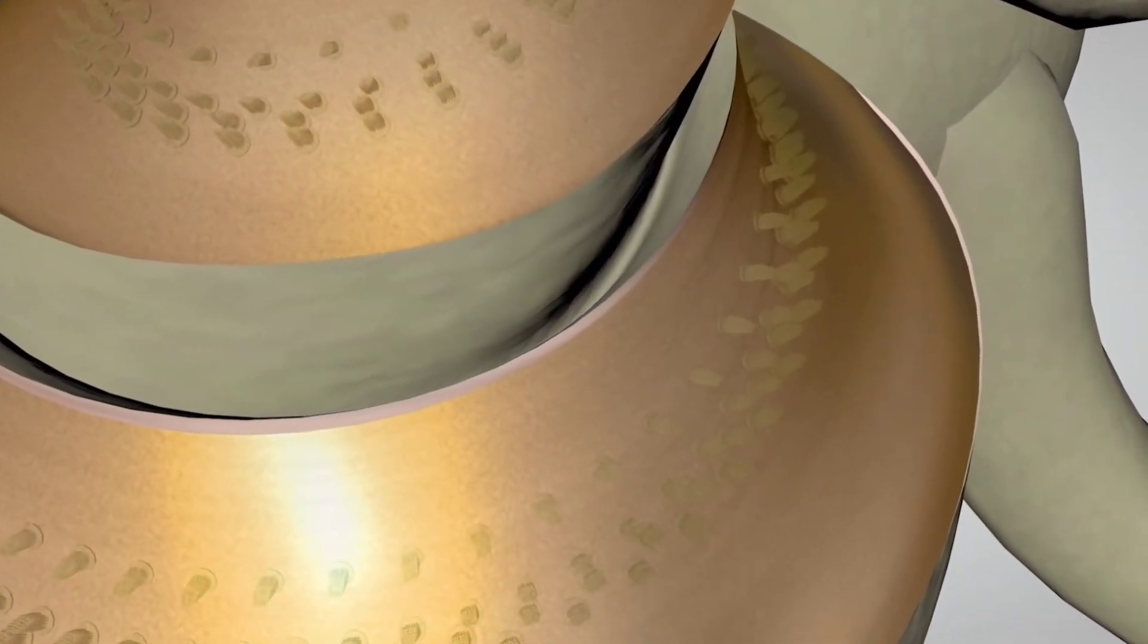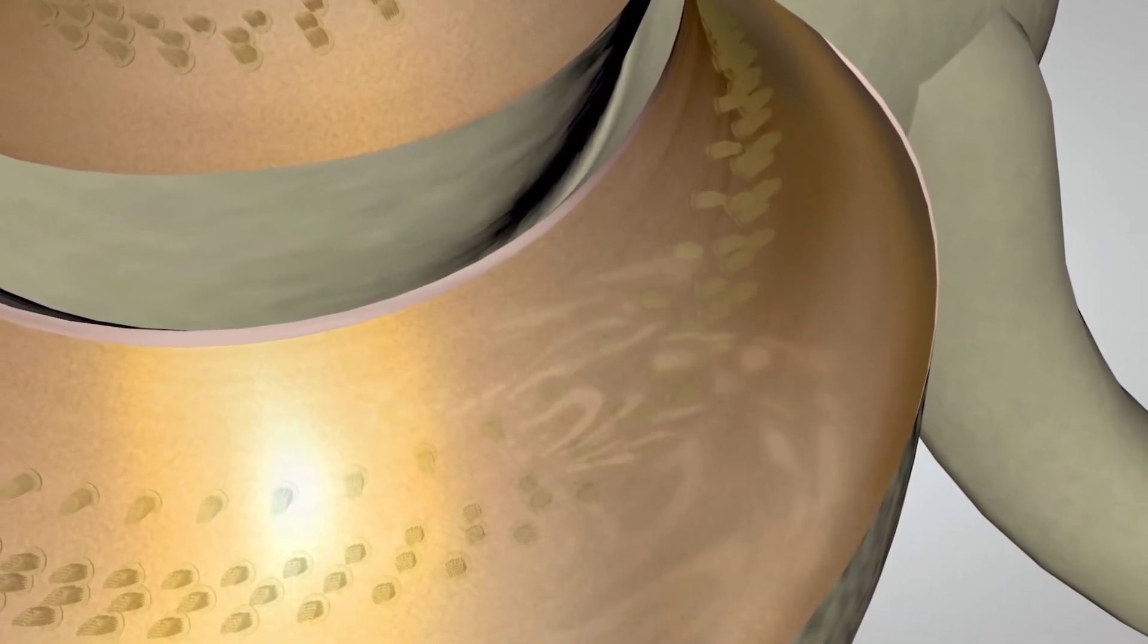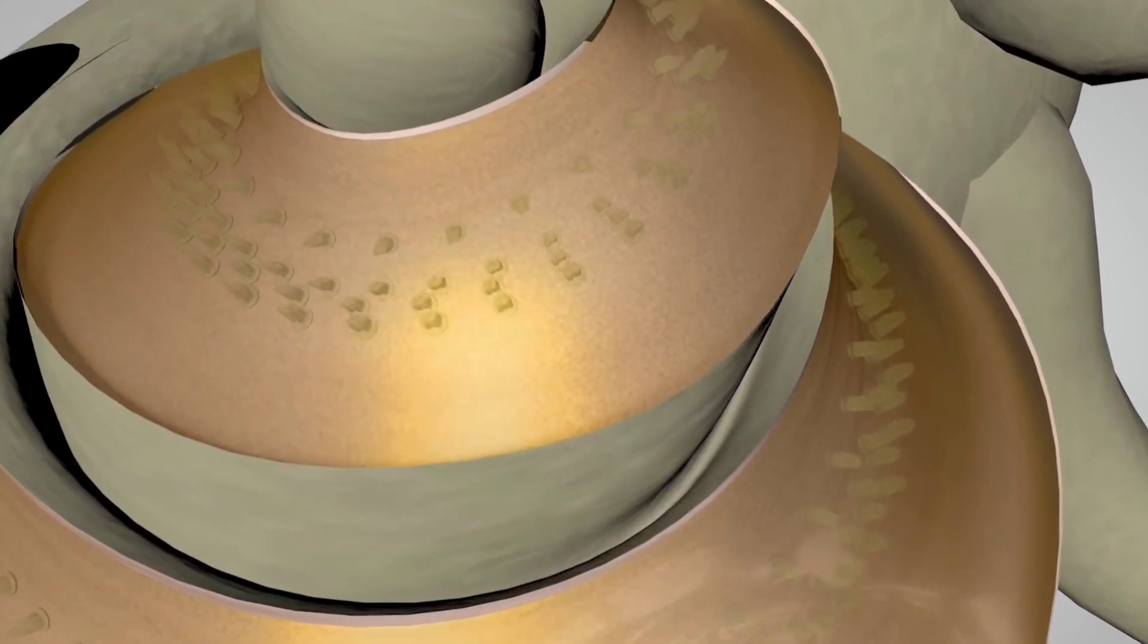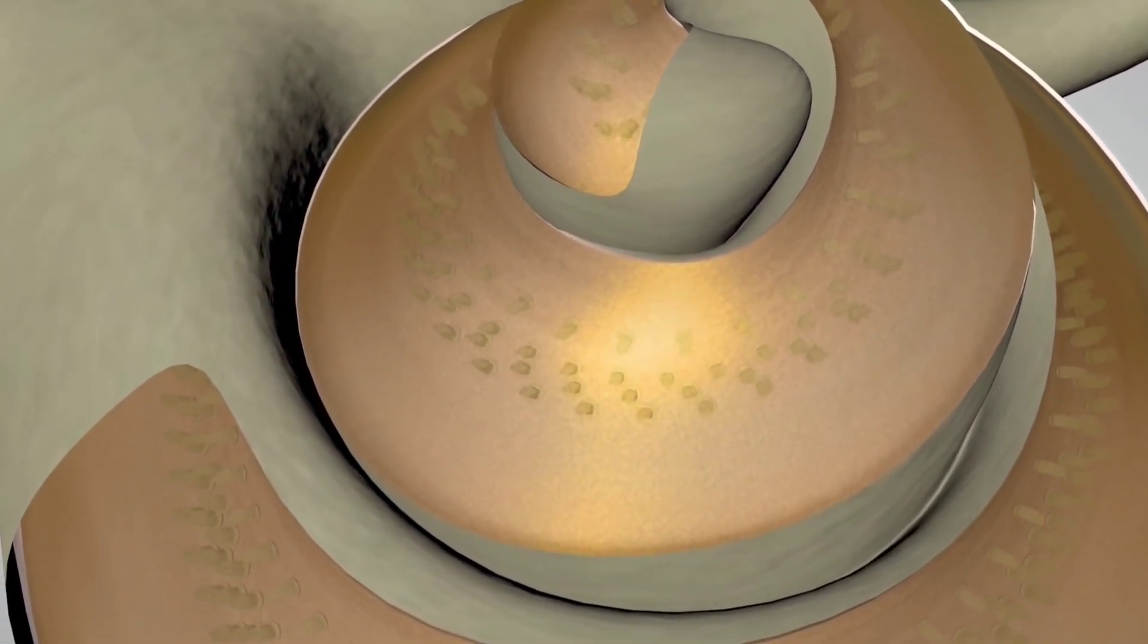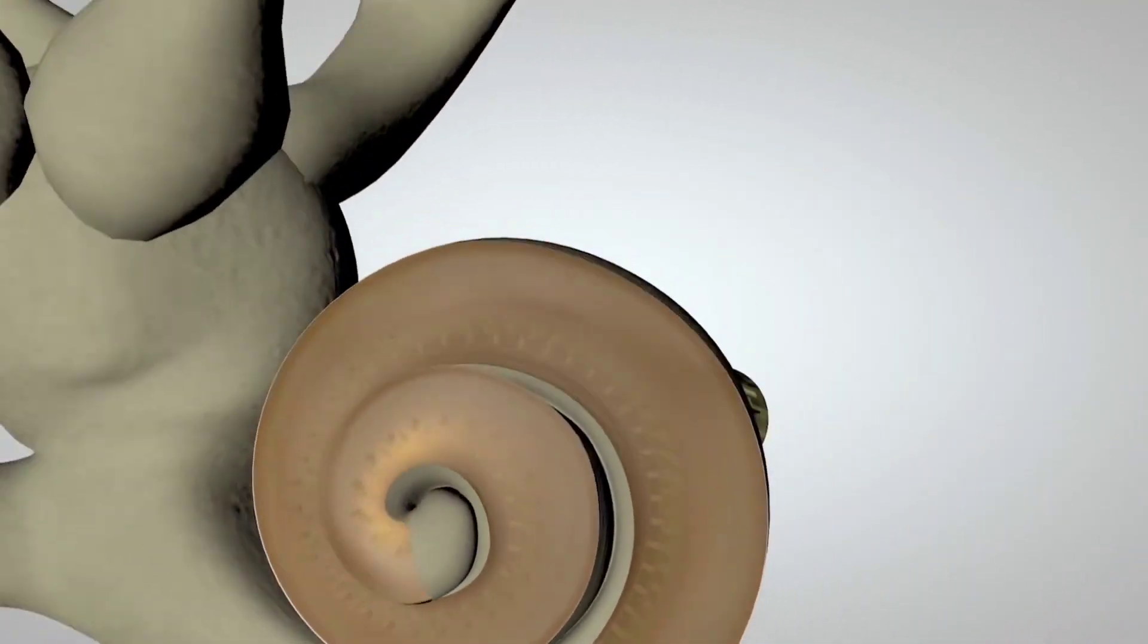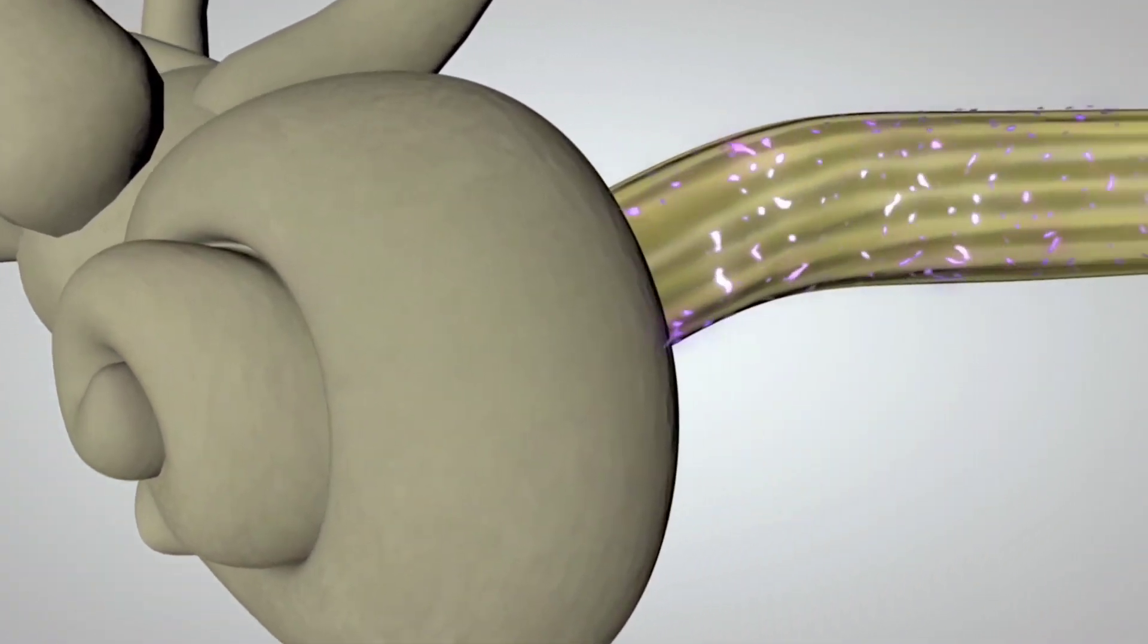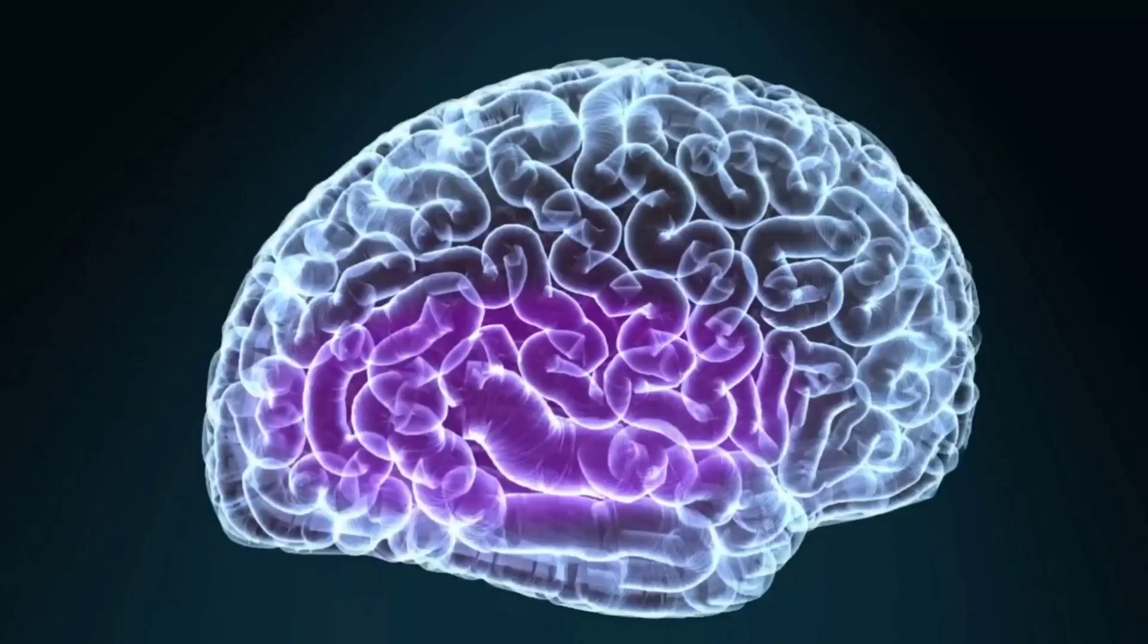The signal reaches the auditory nerve and brain. Different hair cells respond to different frequencies. These frequencies are processed by the sensory cells and transferred in the form of impulses which are transmitted to the brain by the auditory nerve. The brain can interpret these messages as sounds that we can recognize and understand.